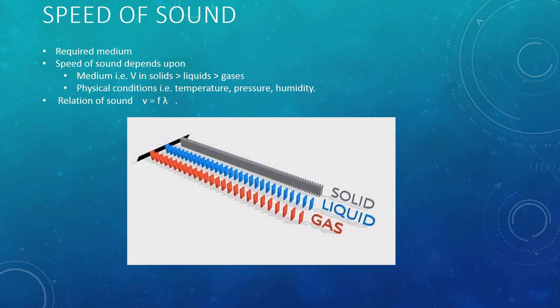The particles of liquid are a bit farther apart, and the particles of gases are even farther apart compared to solids and liquids. The speed of sound is also dependent on physical conditions: temperature, pressure and humidity. The higher the temperature, the more vigorously the particles vibrate and transfer energy more quickly compared to lower temperatures. The relation for sound is V = Fλ, where F is the frequency and λ is the wavelength of the sound.